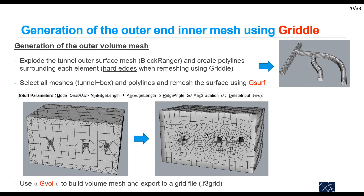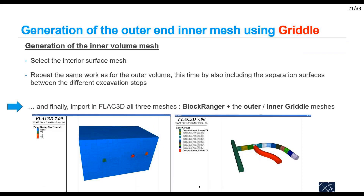I end up with the remeshed surface, and once I have this I use gvol to create the volumetric mesh, which I export as a grid file. I do the same for the interior surface mesh to create the inner volume of the tunnel, also including the separation surfaces between excavation steps so I can simulate a stepwise excavation later. Finally, I import into FLAC3D the three meshes: the Blockranger lining mesh, and the outer and inner Griddle meshes.